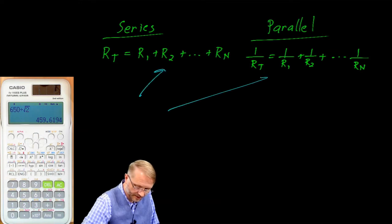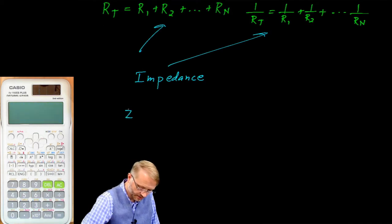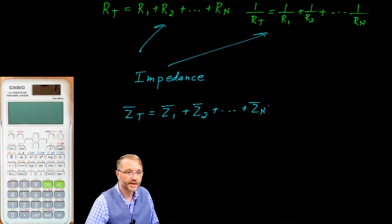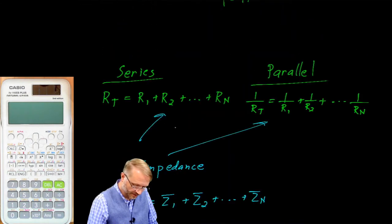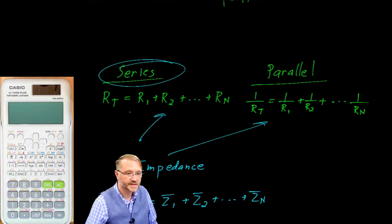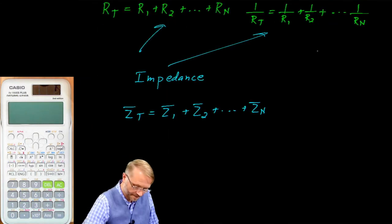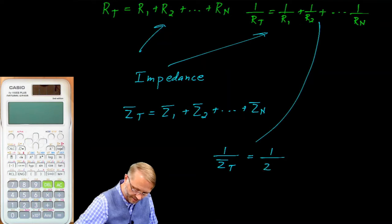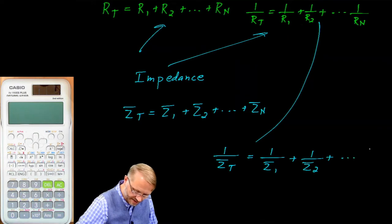This thought will also work for impedance. Now we would say the total impedance is equal to the summation of the individual impedances for a series circuit. And you'll notice we're putting a bar over the impedance to signify that it is a vector. You can see that that has the same form for both resistance and for impedance. It's similar for the parallel piece. We say 1 over the total parallel impedance is equal to 1 over impedance 1 plus the reciprocal of impedance 2 plus as many impedances as you might have.